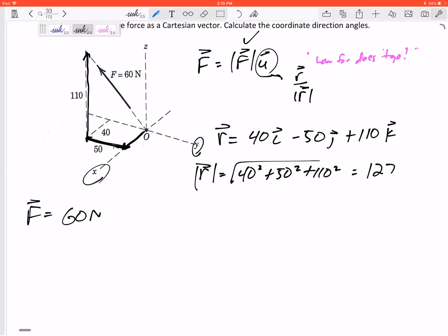So here we go. F in component form would be 60 Newtons times R: 40 I minus 50 J plus 110 K, divided by 127. You can write it like that, or you can write all of this divided by 127, divided by 127, divided by 127. Either way, all three of those are divided by 127.